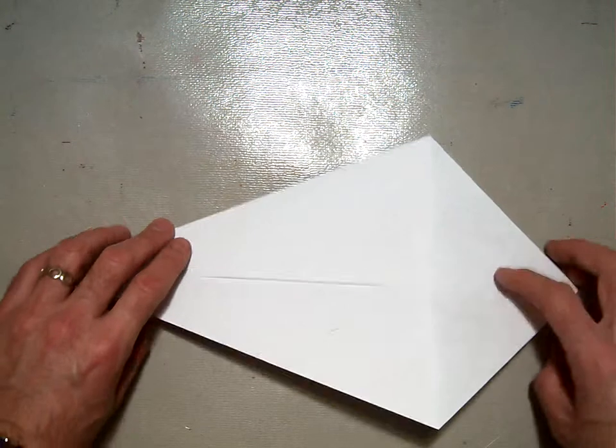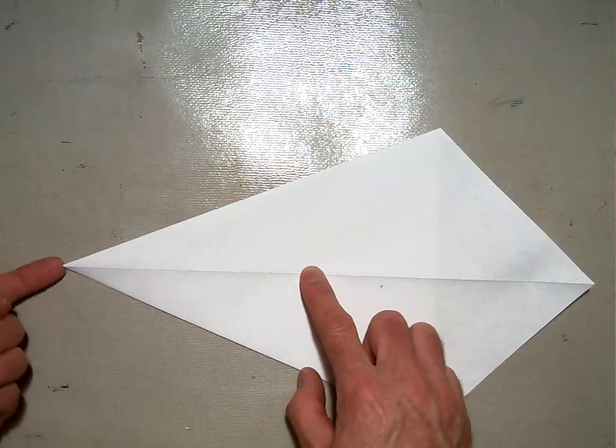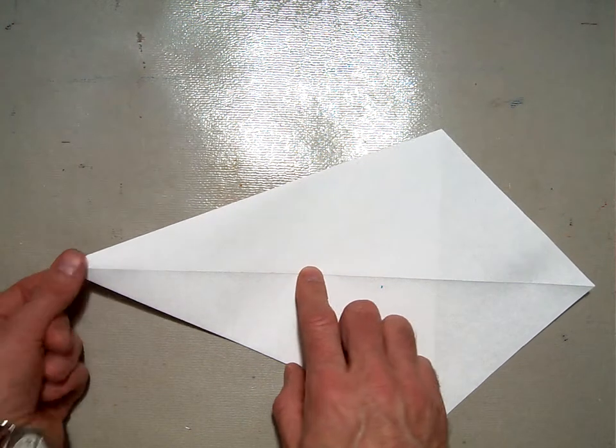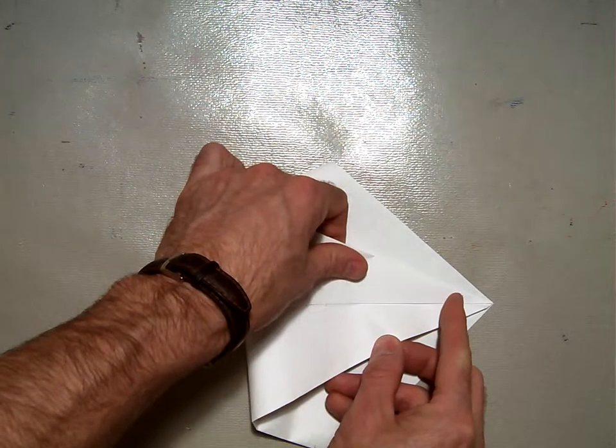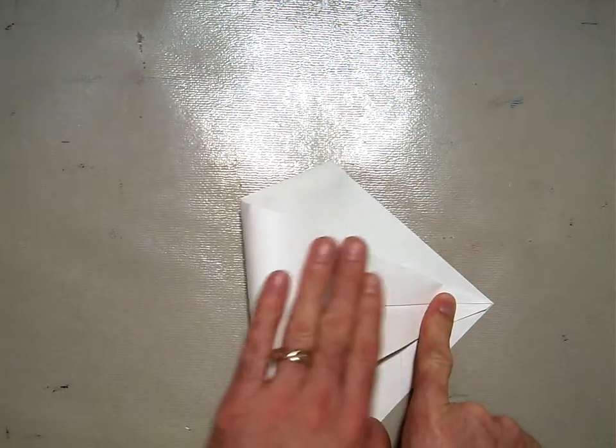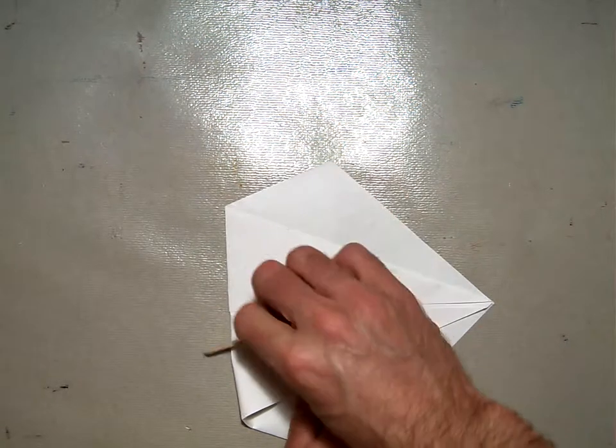Then, flip it over so that this piece is now a mountain fold. Then you're going to take this point here, which will end up being our beak later, and you're going to fold it all the way back to meet up with the tail. So make sure those two ends meet and then crease right along that middle section here.